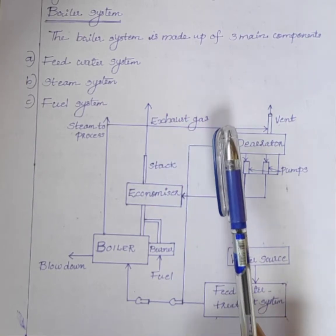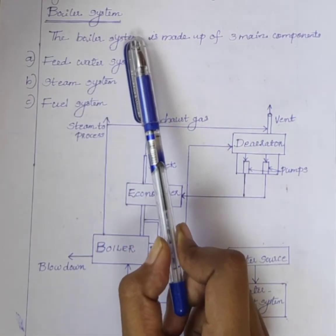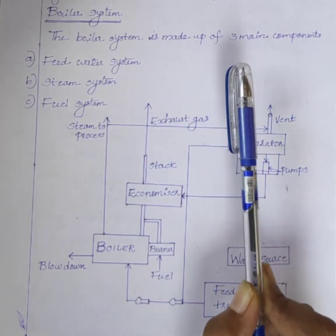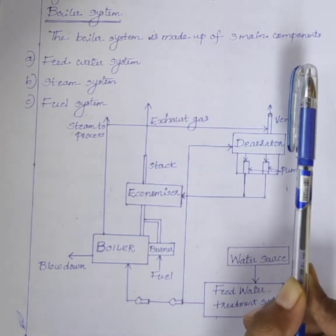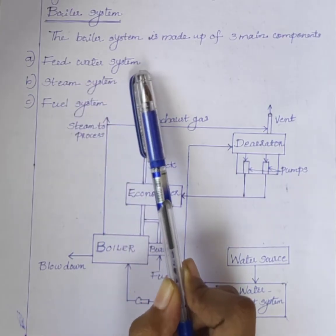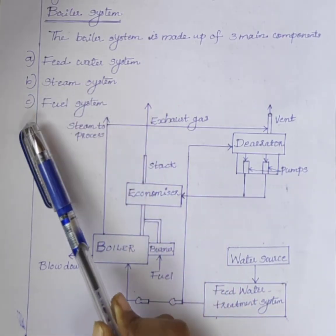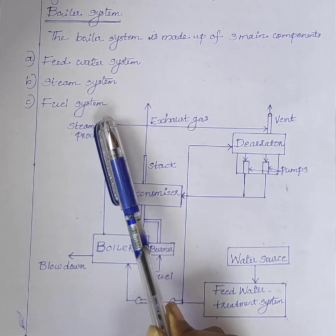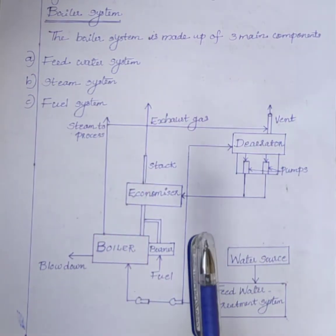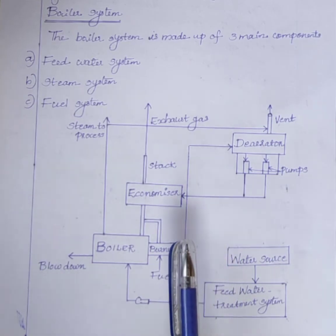Hello students. Today we will discuss boiler system. The boiler system is made up of three main components: first one feed water system, second one steam system, and third one is fuel system. The schematic diagram of a typical boiler system is shown here.